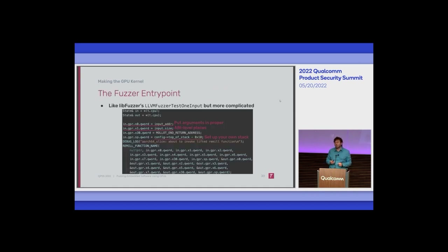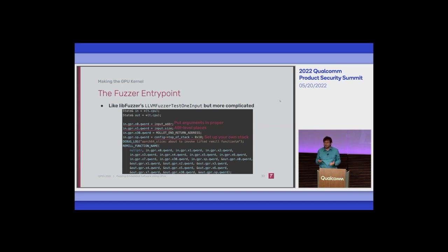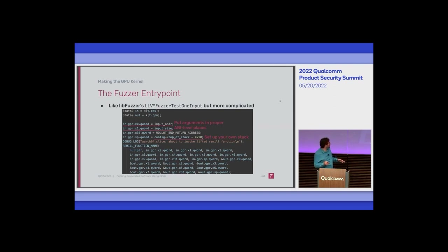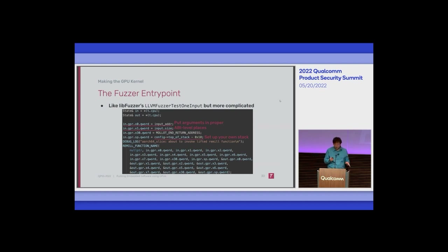Once you have the MMU you need your own entry point. This entry point will be familiar to people who have worked with LLVM's libFuzzer — it's like libFuzzer but way more complicated. You get to put your arguments into their proper ABI locations yourself, set up your own stack, invoke your own function, and figure out what the good or bad result is. All the things a compiler would do for you, you currently have to do yourself. The upside is that this part should be fairly easy to automate or semi-automate.